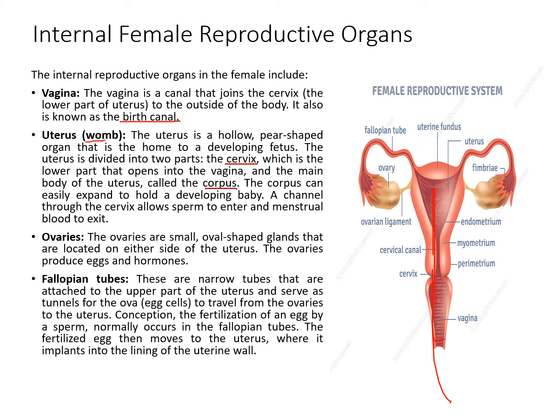The uterus, or womb, is a hollow pear-shaped organ that is the home of the developing fetus. The uterus is divided into two parts: the cervix and the corpus. The cervix is the lower part that opens into the vagina. The corpus can easily expand to hold a developing baby. A channel through the cervix allows sperm to enter and menstrual blood to exit.